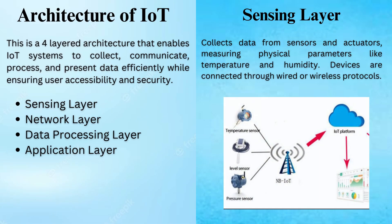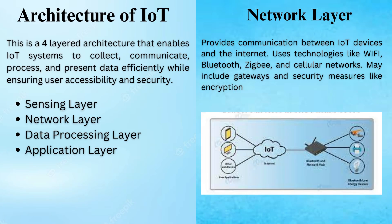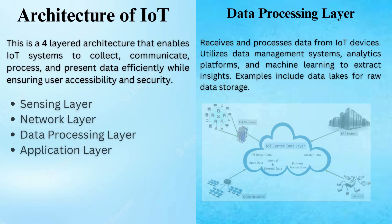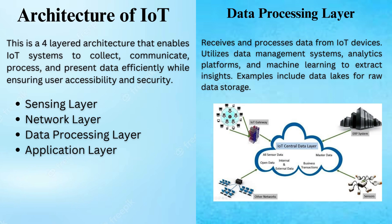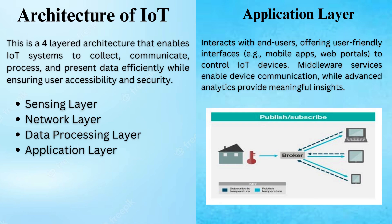Let's see the architecture of IoT. The first layer is the sensing layer, that collects data from sensors and actuators. The second layer is the network layer, which provides communication between IoT devices and the Internet. Third is the data processing layer, which receives and processes data from IoT devices. And the last layer is the application layer, which interacts with end users.